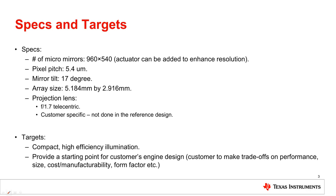The DMD used in this reference design is a 960 by 540 array with pixel pitch at 5.4 microns. The angle of micromirror tilt is 17 degrees. The total active array size is 5.184 mm by 2.916 mm with diagonal size at 0.23 inches. The same array size can have enhanced resolution with the help of an actuator — for example, the resolution can be quadrupled to 1080p with a four-way actuator.